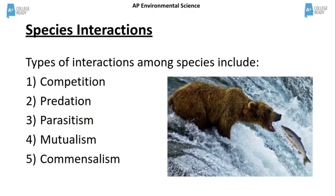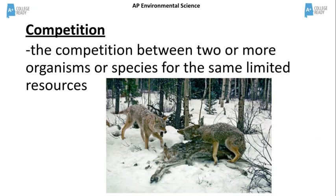Now let's look at ways species interact with one another. There are four types of interspecies interactions, including competition, predation, parasitism, mutualism, and commensalism. Competition occurs between members of one species or between two different species when they both require the same resource. The resources include food, water, territory, or mates.